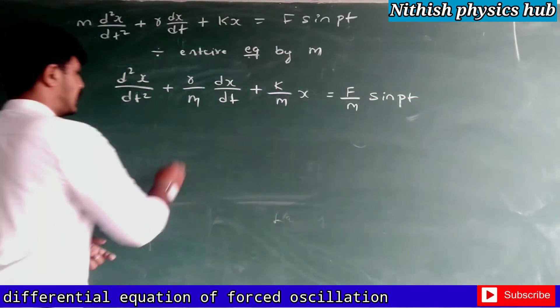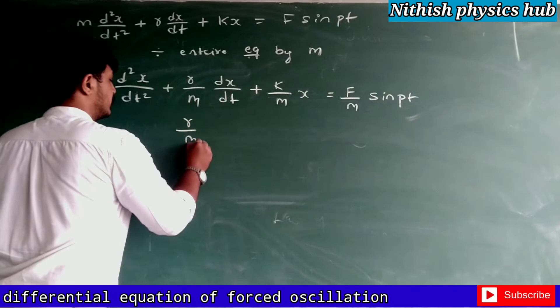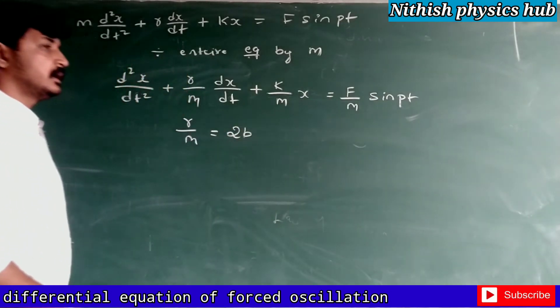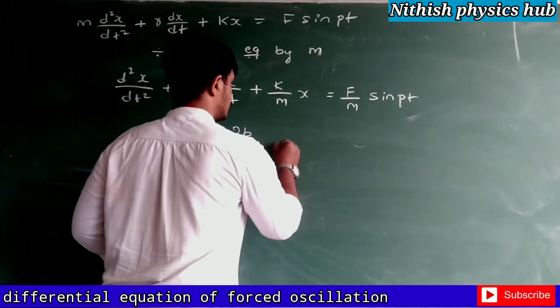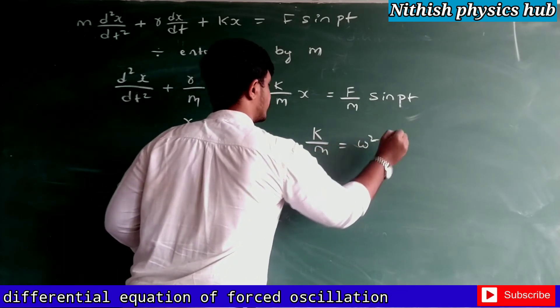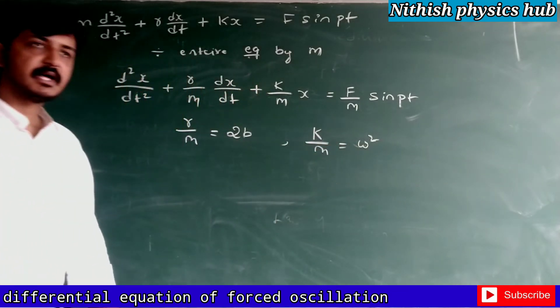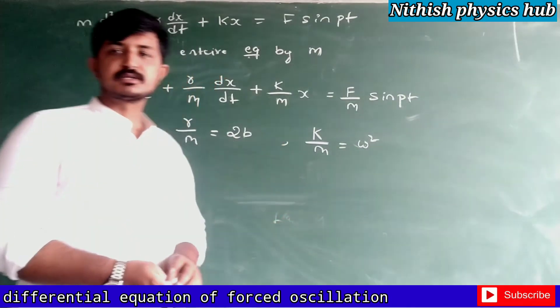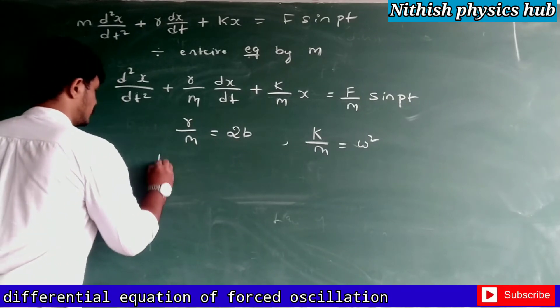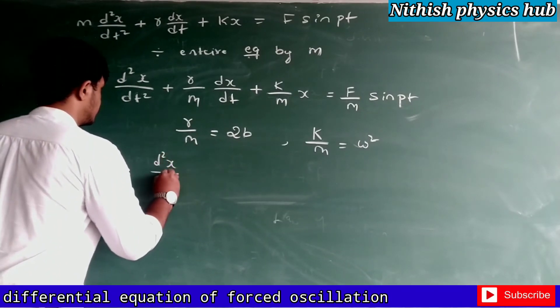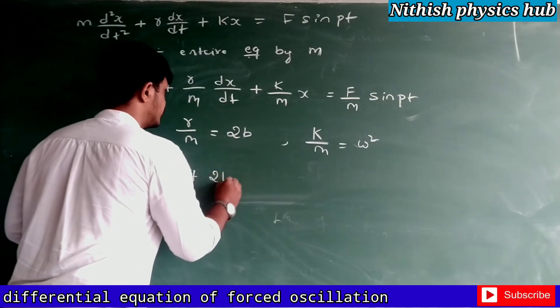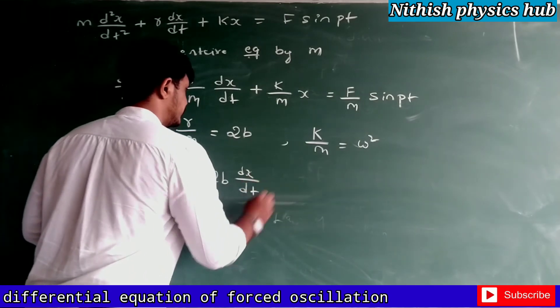Here r by m we can write as 2b, and k by m is equal to ω², where ω² is the natural frequency of an oscillating body.